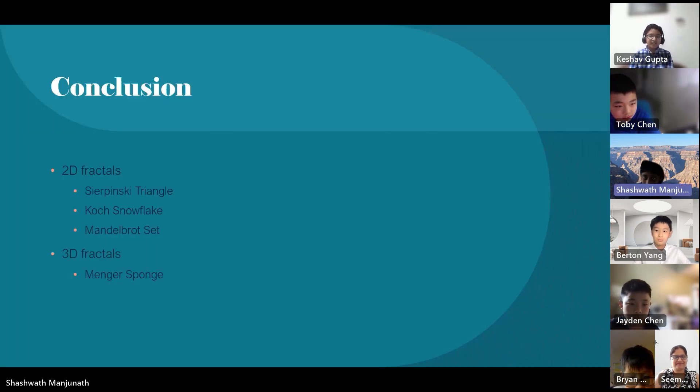Okay, now we need to conclude. Today we learned about both 2D and 3D fractals. Some 2D fractals are the Sierpinski Triangle, Koch Snowflake, and Mandelbrot set. One 3D fractal is the Menger sponge. These, although famous, are just a small part of the fractal world. I hope this inspires you to explore more.